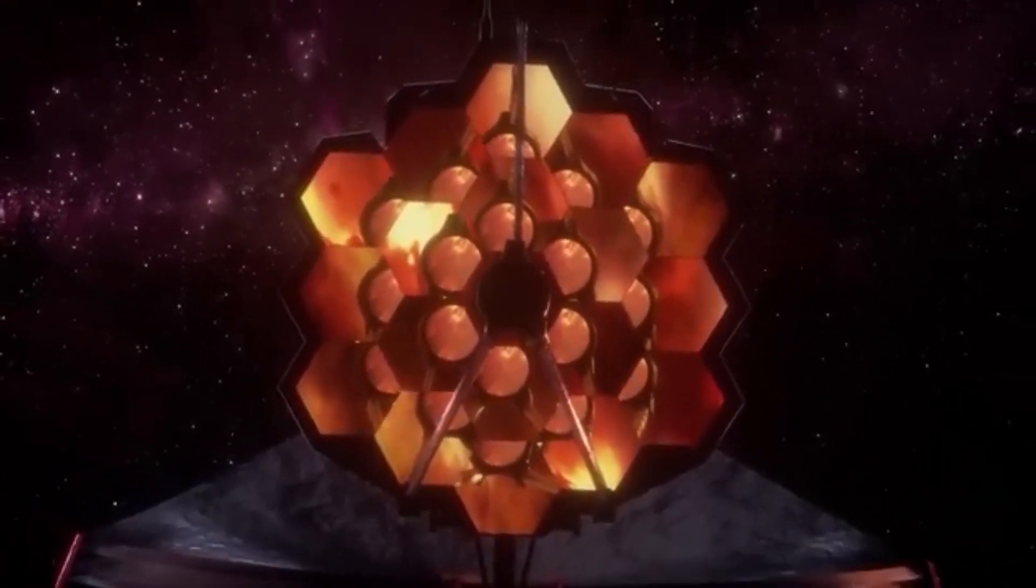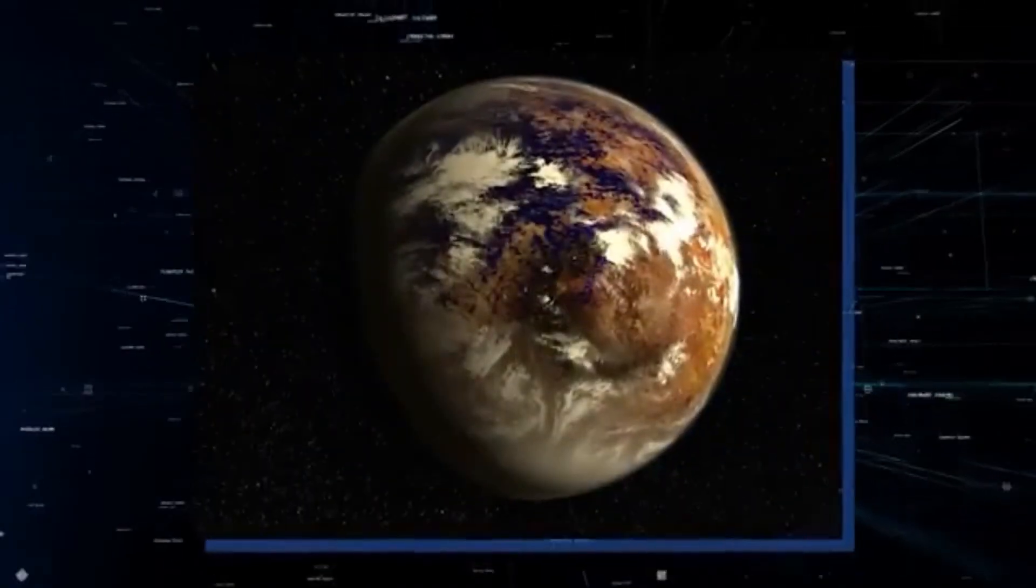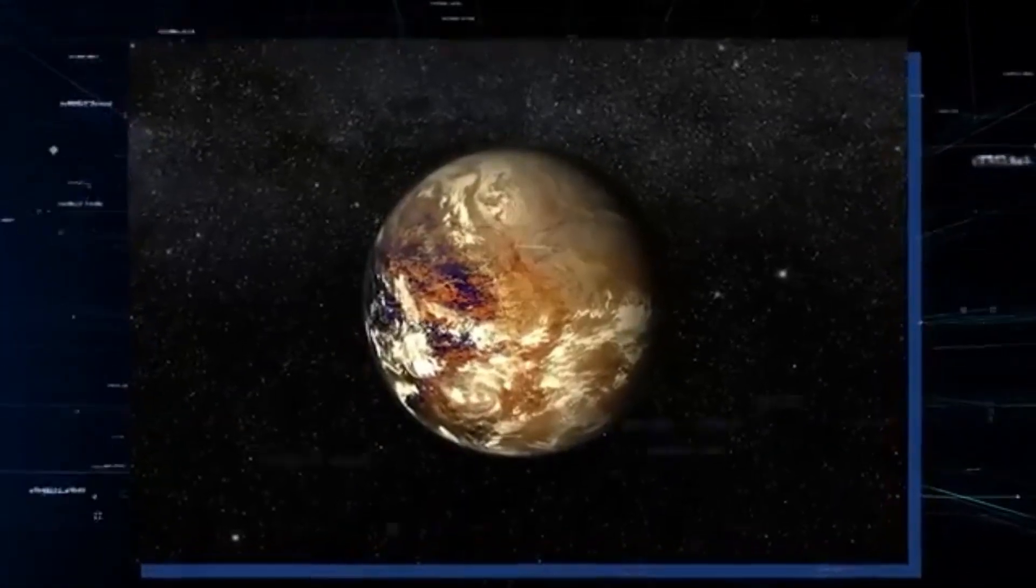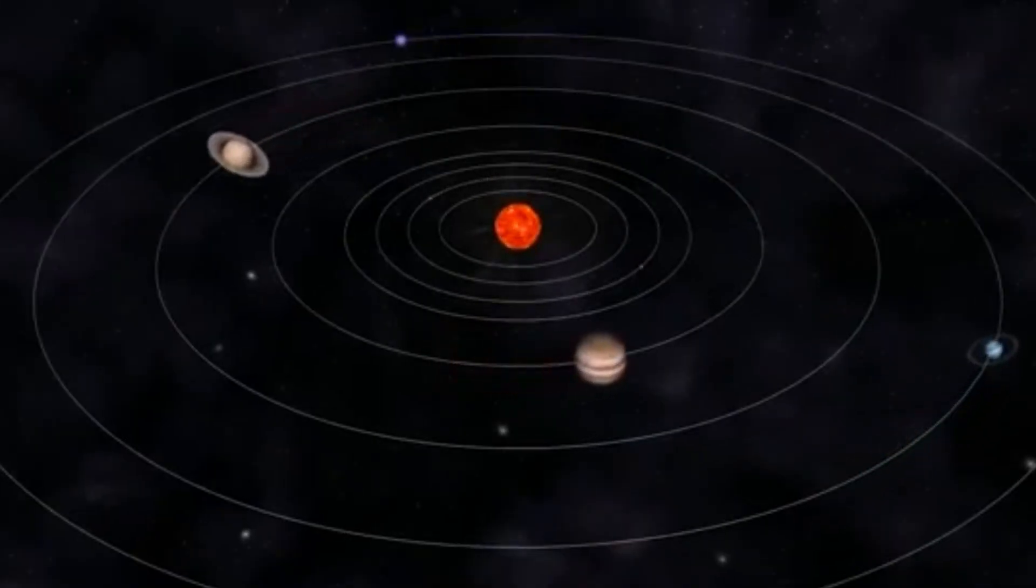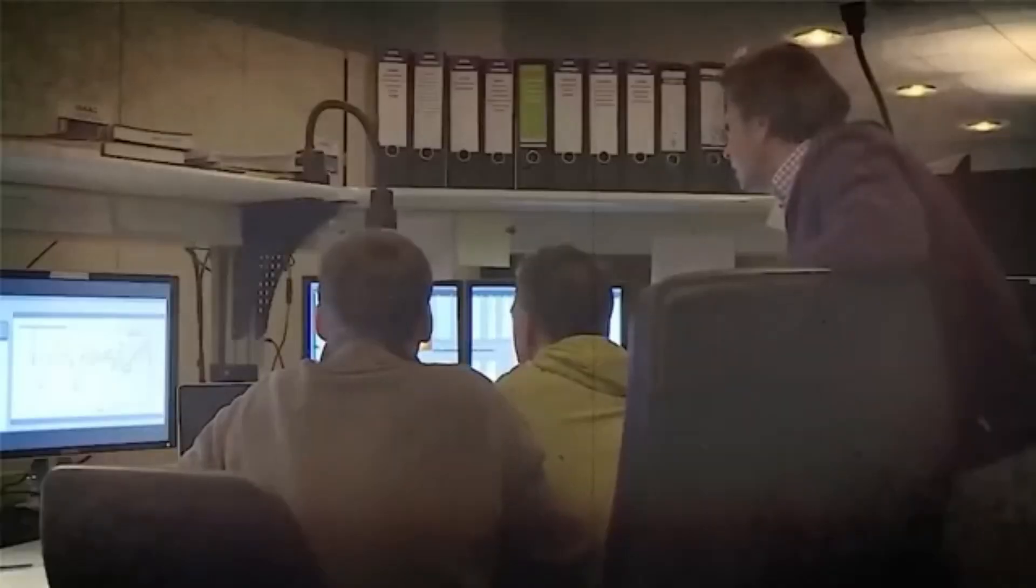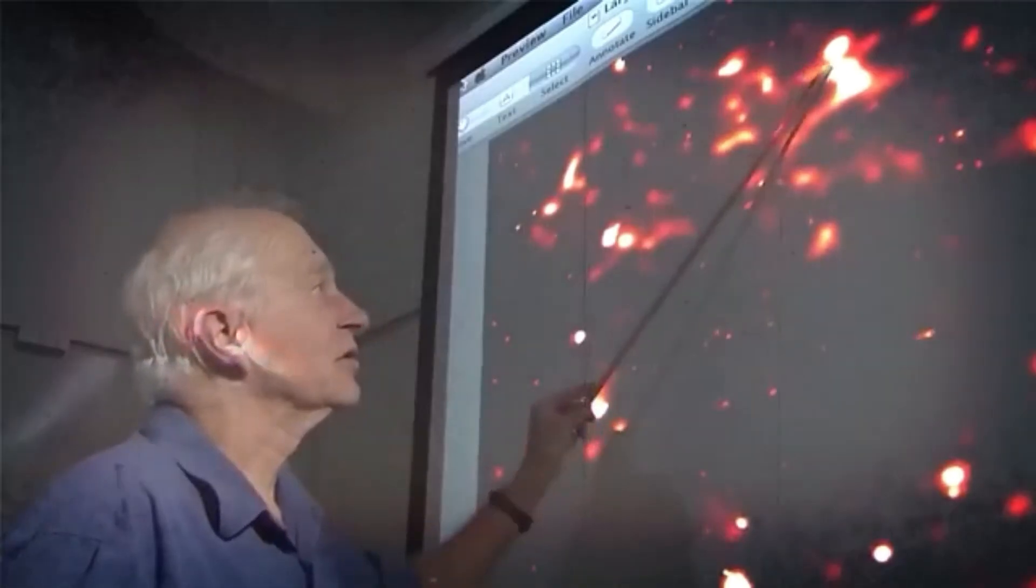However, a planet very similar to Earth in size and proximity was recently discovered, and it may hold the key to solving all of our questions. This planet, known as Proxima b, has sparked renewed enthusiasm among scientists and astronomers, mainly because it resides within the habitable zone of its star, Proxima Centauri.